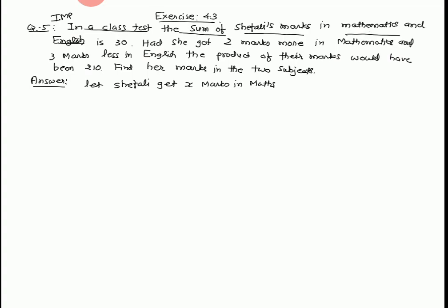Maths and English marks are both 30 marks total. Had she got 2 marks more in maths and 3 marks less in English, their product will be 210. Find her marks in 2 subjects.